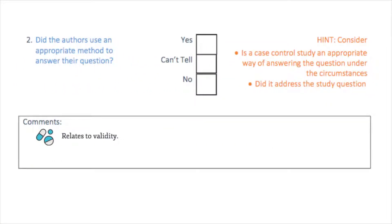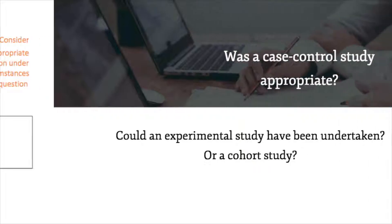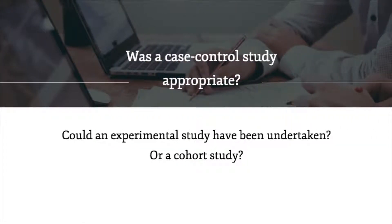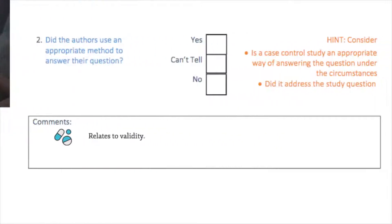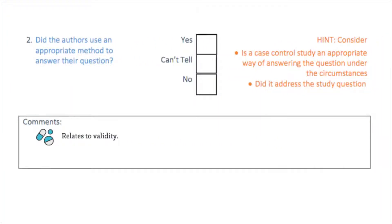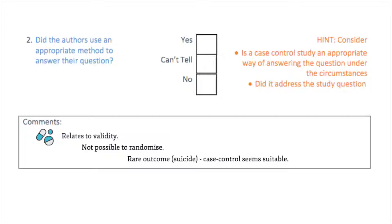This question concerns whether or not a case control study was an appropriate design to answer the research question. For example, we might consider a cohort study, as this is a generally stronger design, or an experimental study. In this case, a case control study does seem to be appropriate, as an experimental study is not feasible because it isn't possible to randomly allocate people to have eczema, and because the outcome of suicide is relatively rare, so a cohort study is not suitable.